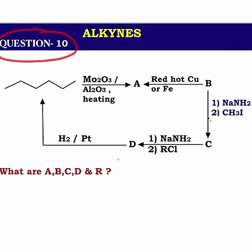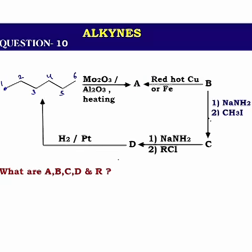This is question number 10 from Alkynes. Different reagents are given and you need to see the direction of arrows properly. Initially, N-hexane is given.